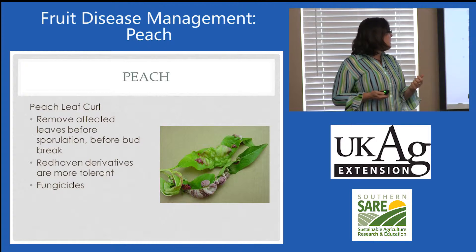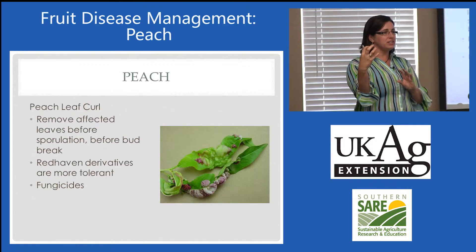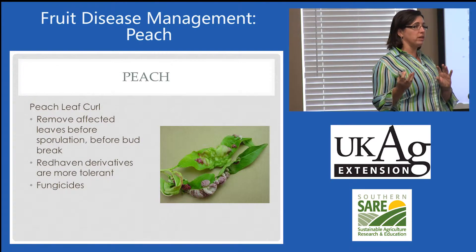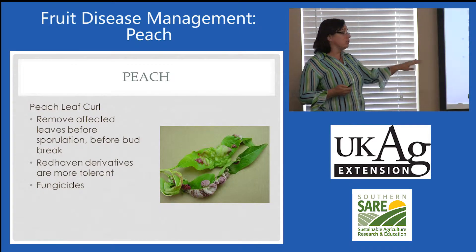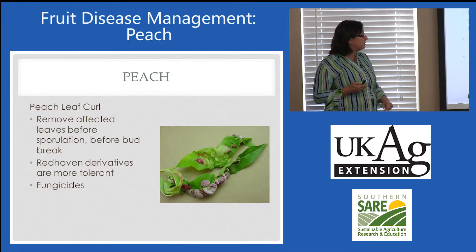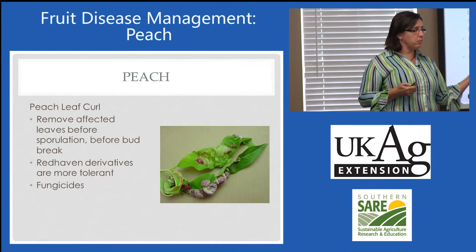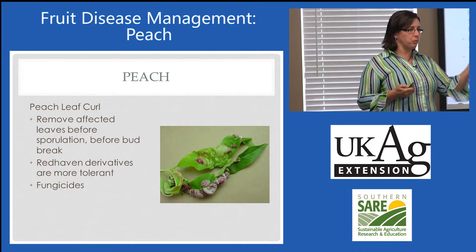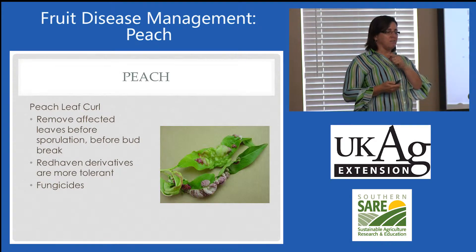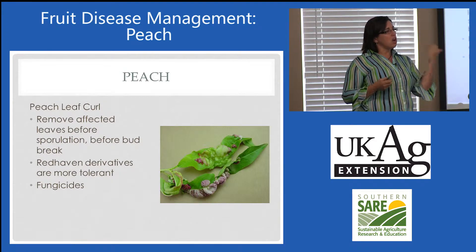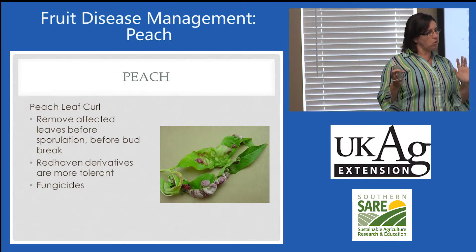Managing it really early is very important. Removing leaves before sporulation occurs — you have a little bit of time where a symptomatic leaf comes out but hasn't sporulated yet. Once it's powdery, it's too late. Red Haven derivatives are more tolerant to peach leaf curl than some others. Fungicides are really important — pre-pink or right after leaves fall, after that dormant period, copper can be used. There are some organic products available, so treating before or after the season is the approach.